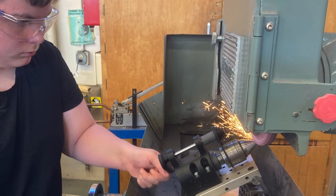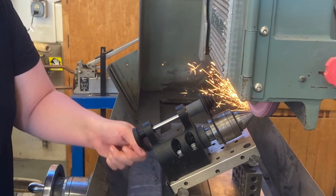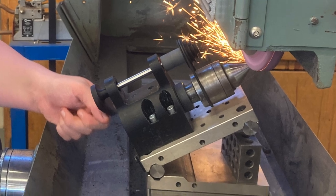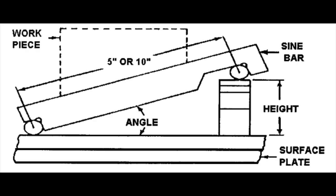If we zoom in on the entire assembly you can see that the sign plate sets the angle for the Whirly Gig. Sign plates or sign bars typically have a standard length of 5 or 10 inches and are used to accurately set up work at an angle for machining or inspection.